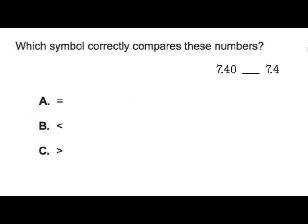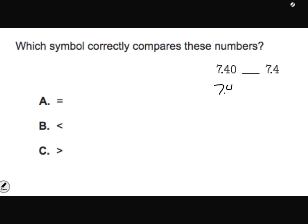Before we start we're going to do a review. Pause, try this problem, and then check your answer. We're going back to decimals. It says which symbol correctly compares these numbers, and I have 7 and 40 hundredths and 7 and 4 tenths. If I have 4 in the tenths place, I can put a zero in the hundredths place, and I can see that these are equal - the answer is A.